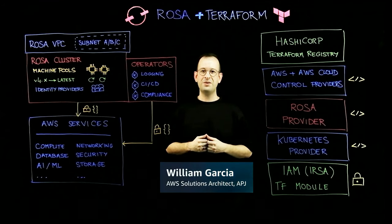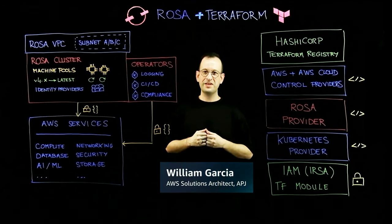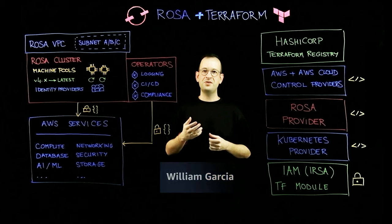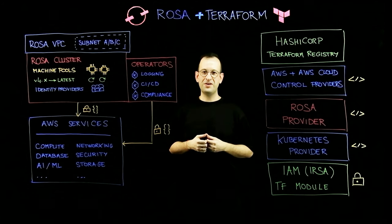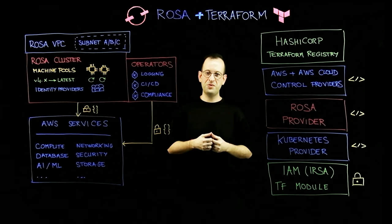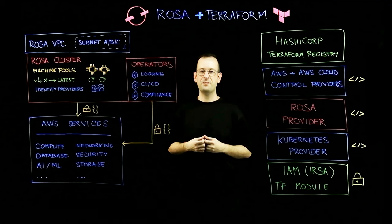Hi everyone, I'm William Garcia, Partner Solutions Architect at AWS. Today I'm excited to talk about Automation and Red Hat OpenShift Service on AWS, or ROSA.